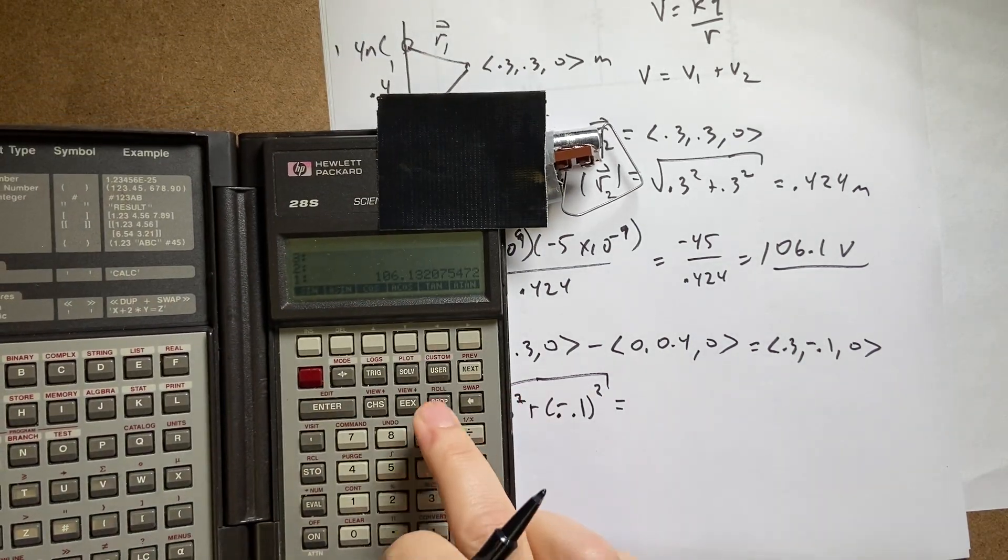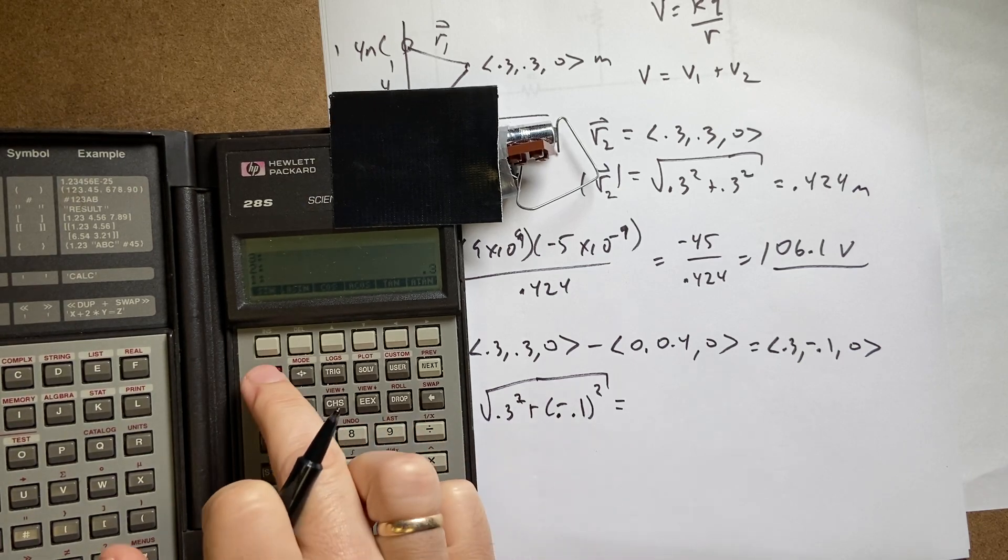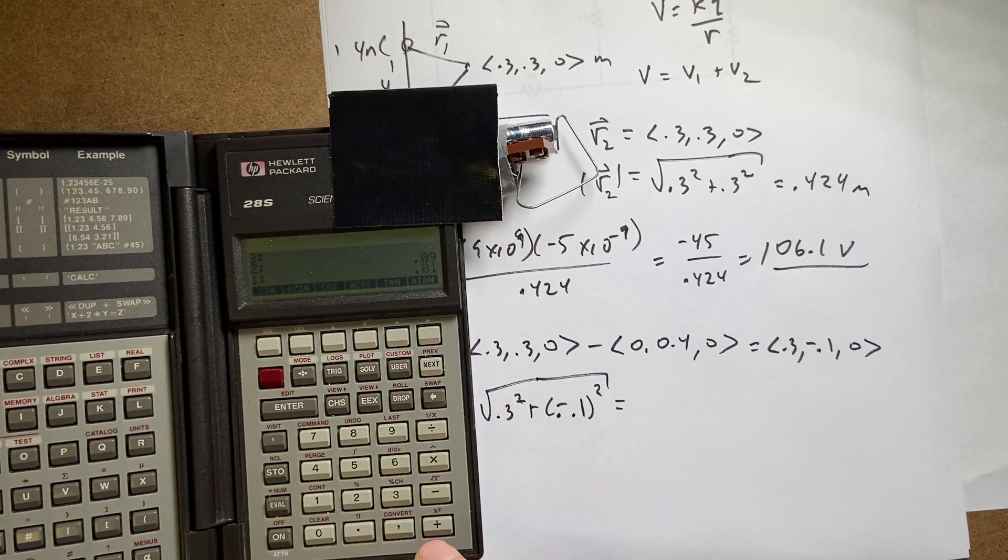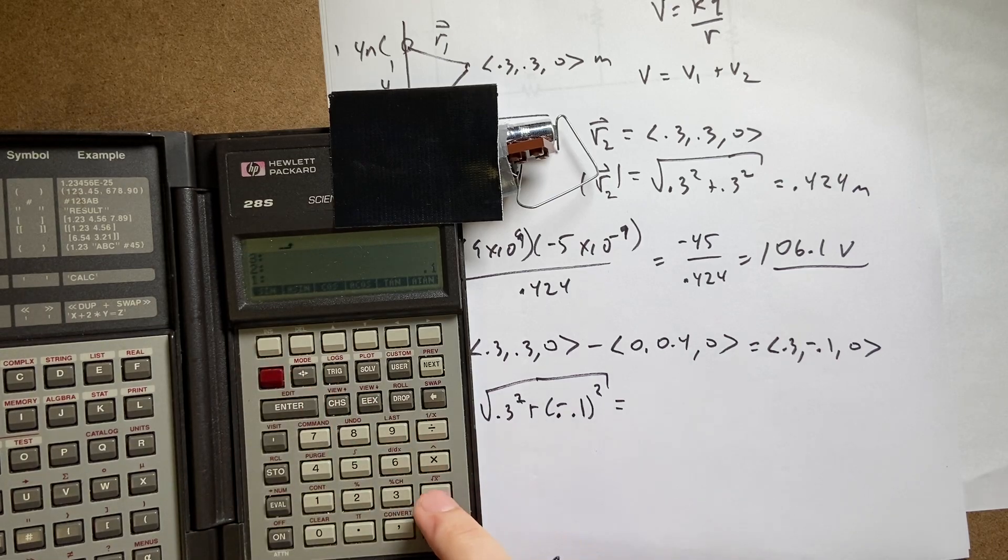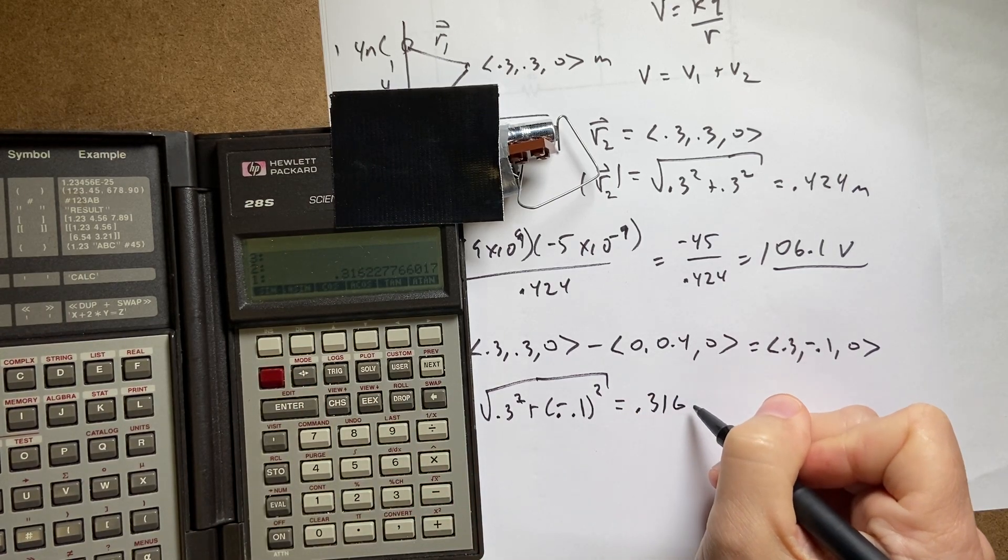I get 0.3 enter squared, 0.1 squared. Add those together and then take the square root. And I get 0.316 meters.